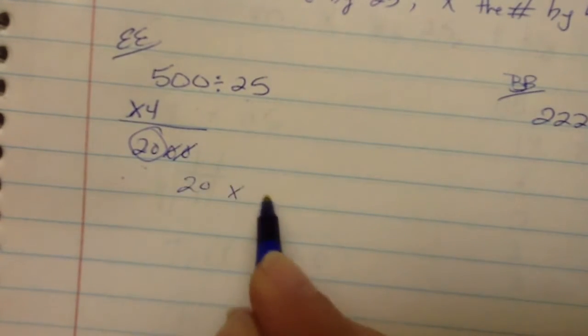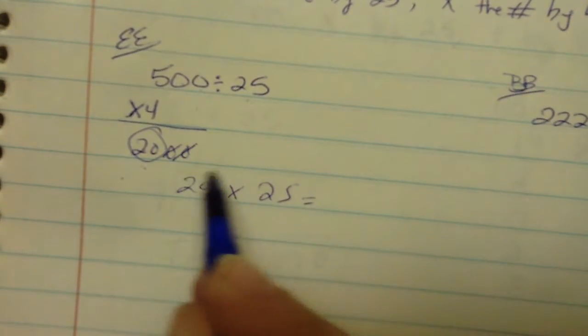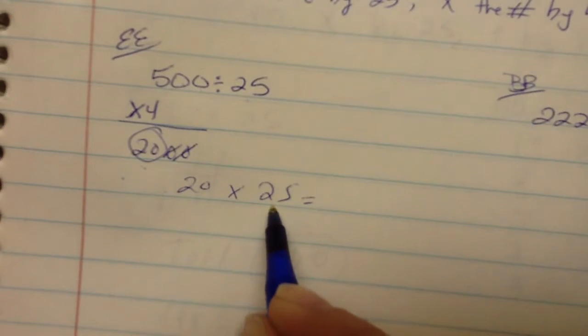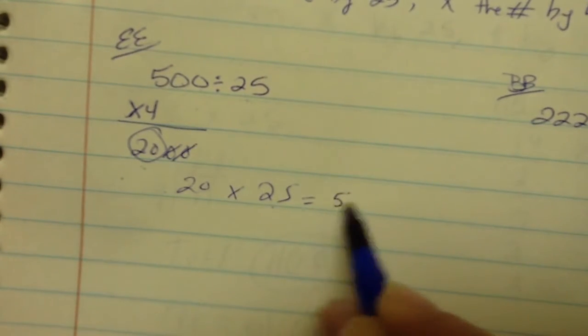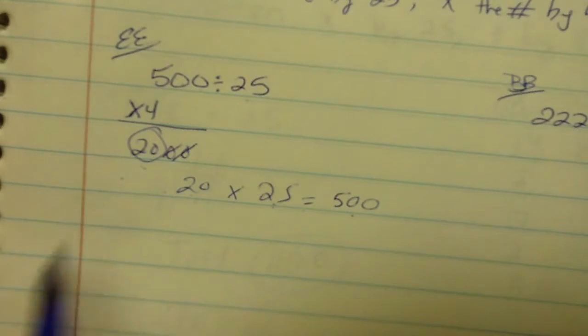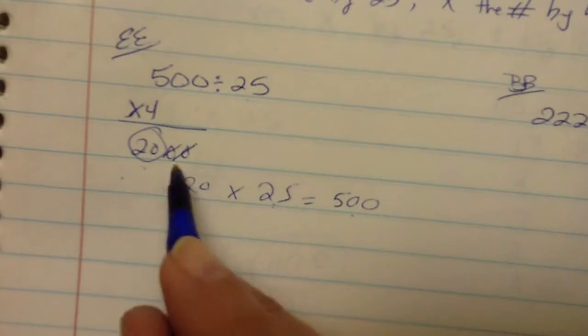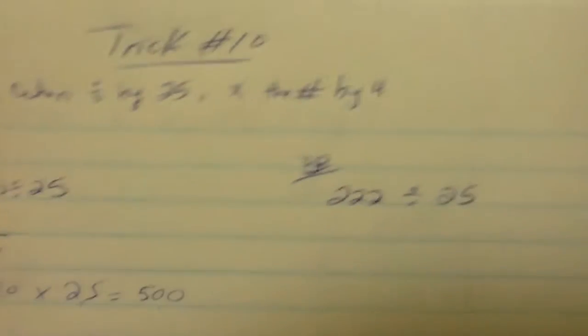20 times 25 is the same thing as saying 2 times 25. We all know that 2 quarters is 50 cents. 2 times 25 is 50. And add a zero at the end, 500. Test of reasonableness? Check. Your answer is 20.